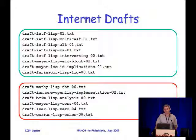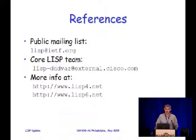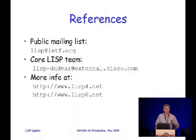Here's the list of Internet drafts. As you can see, the five core documents have all been renamed as working group documents. There are also several other drafts discussing implications of LISP that aren't necessarily protocol documents or are work in preliminary progress. Documents circled in red at the bottom are either research documents or things not currently being pursued. References include a public mailing list for the IETF LISP working group, contact information for the core LISP team, and more information including tutorial presentations at the LISP4.net and LISP6.net websites.